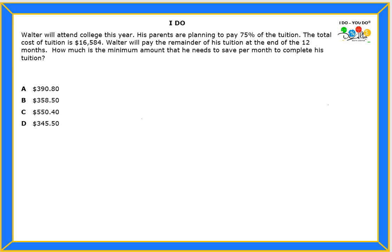Hello students, let's read the problem. It says Walter will attend college this year. His parents are planning to pay 75% of the tuition. The total cost of tuition is $16,584. Walter will pay the remainder of the tuition at the end of the 12 months. How much is the minimum amount that he needs to save per month to complete his tuition?